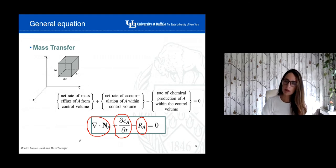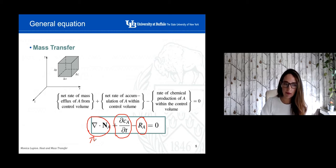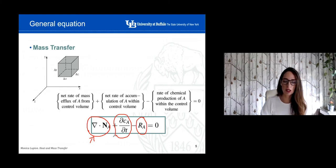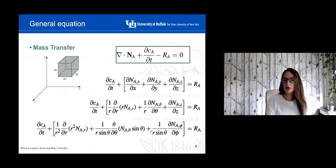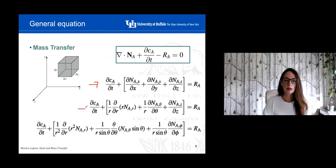We have three different terms, similar to the general equation for heat transfer: the net rate of mass flux of element A in the control volume, plus the net rate of accumulation of A — how the concentration of A changes with time within the control volume — and a third term related to the rate of chemical production of A within the control volume, and this is equal to zero. This is the general equation for mass transfer. If you want to express it in different coordinates, you have Cartesian coordinates, cylindrical coordinates, and spherical coordinates.